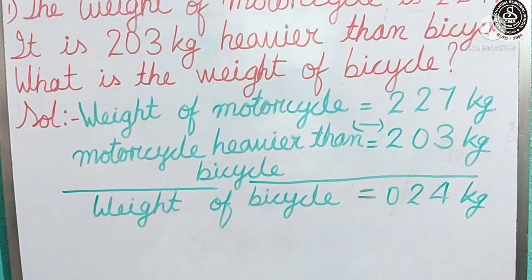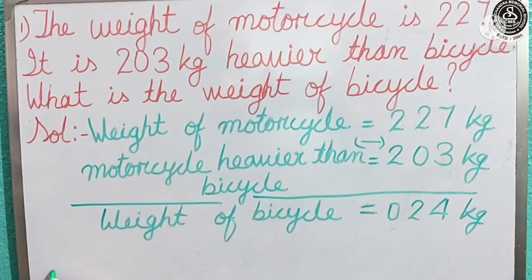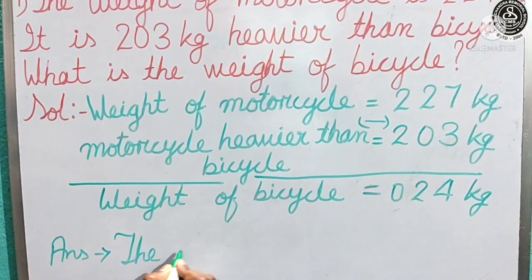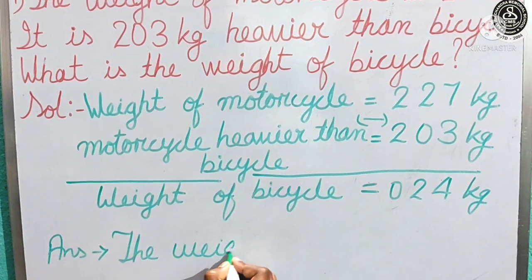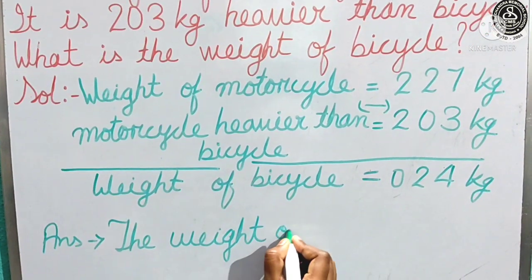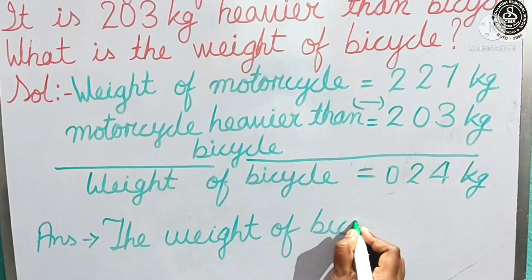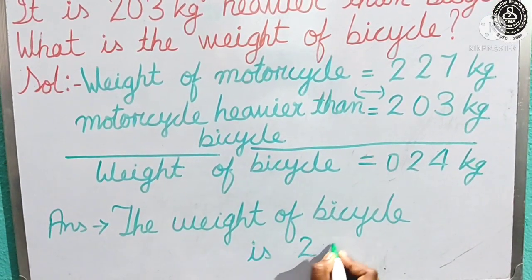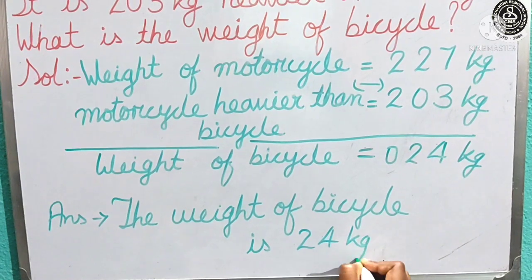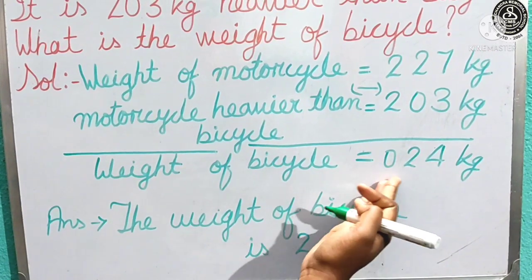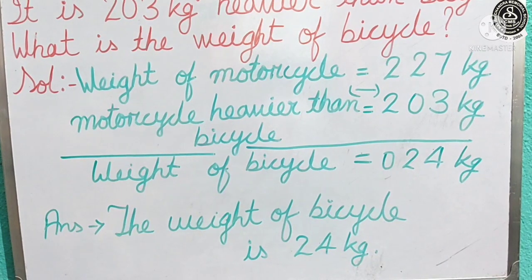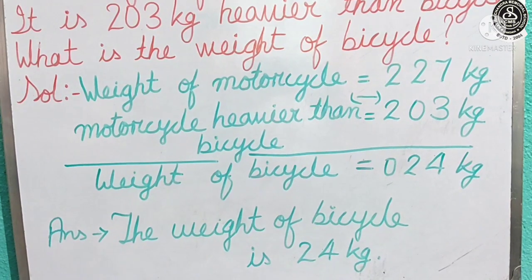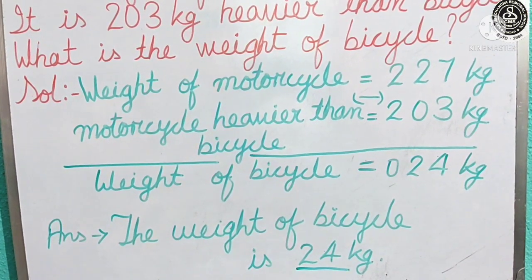The weight of bicycle is 24 kg. We will remove the leading zero because before a number, if any zero is there, it has no value. So we read it as 24. Here we can write only 24 kg. Now let us see the next question, children.